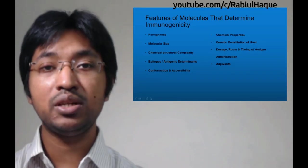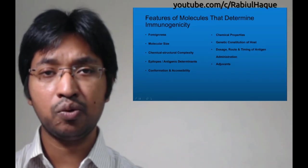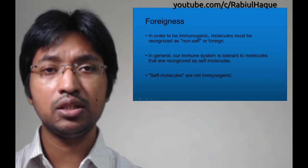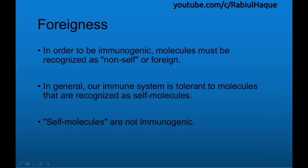Let's talk about these various features one by one. The first feature is regarding foreignness. Always remember, in order to be immunogenic, molecules must be recognized as foreign or non-self. In general, our immune system is tolerant to molecules recognized as self molecules, meaning self molecules are not immunogenic.